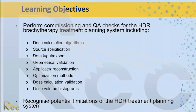The learning objectives here are to gain information about commissioning a treatment planning system, which includes the dose calculation algorithm, source specification, data input and export, geometrical validation, applicator reconstruction, optimization methods, validation of the dose calculation, and the DVH display. At the end, we also want to recognize any potential limitations of the treatment planning system.